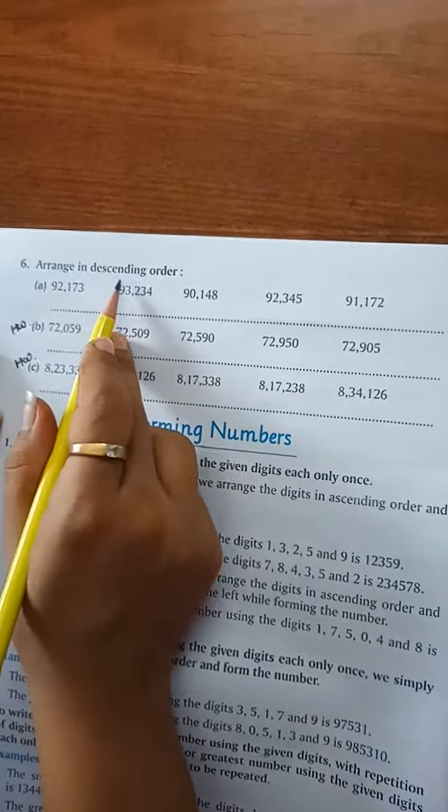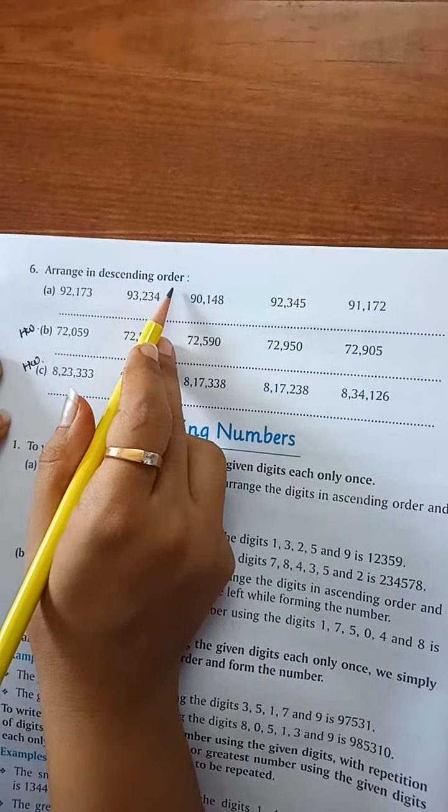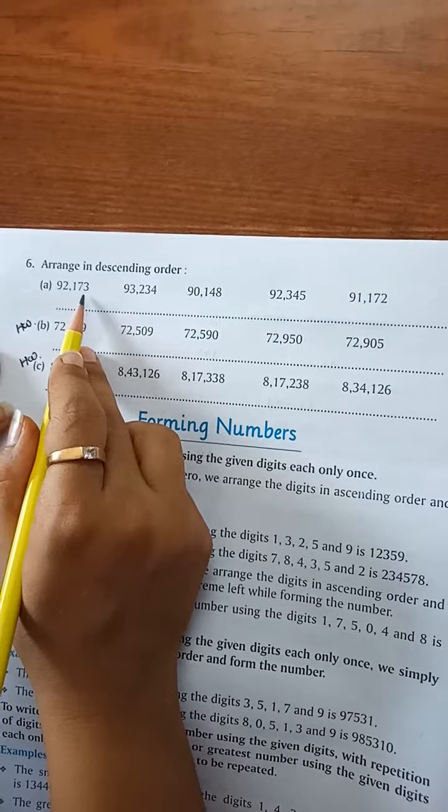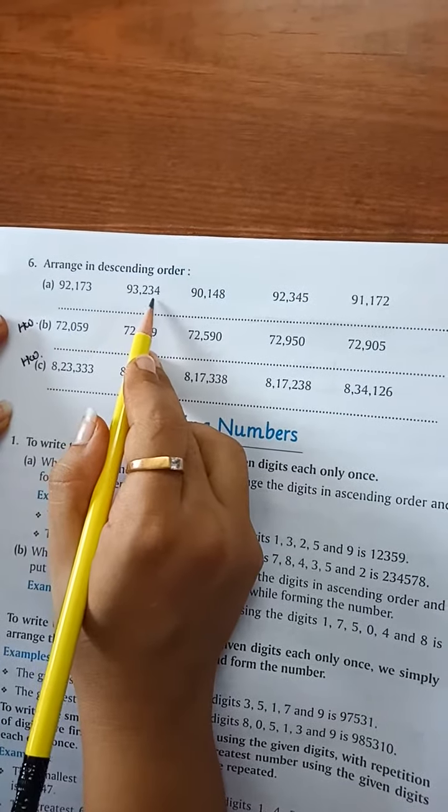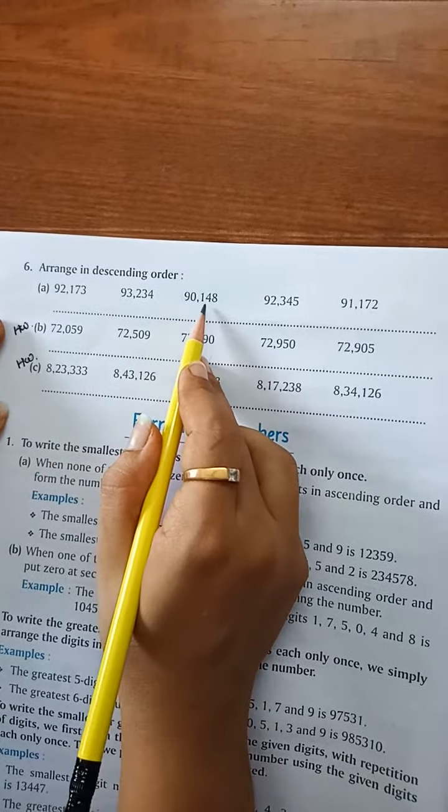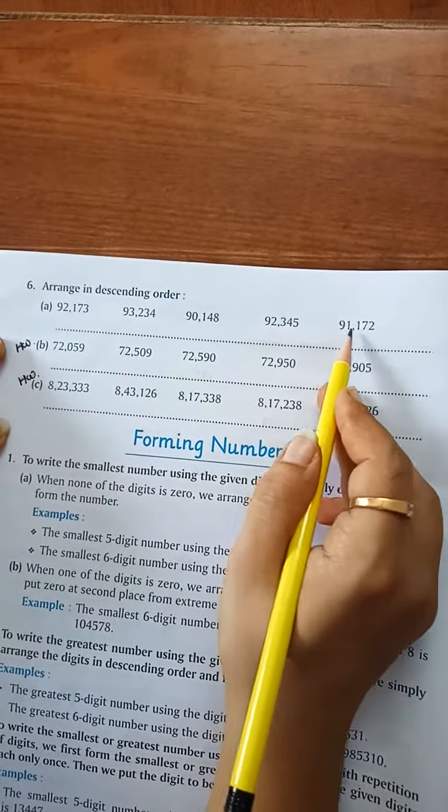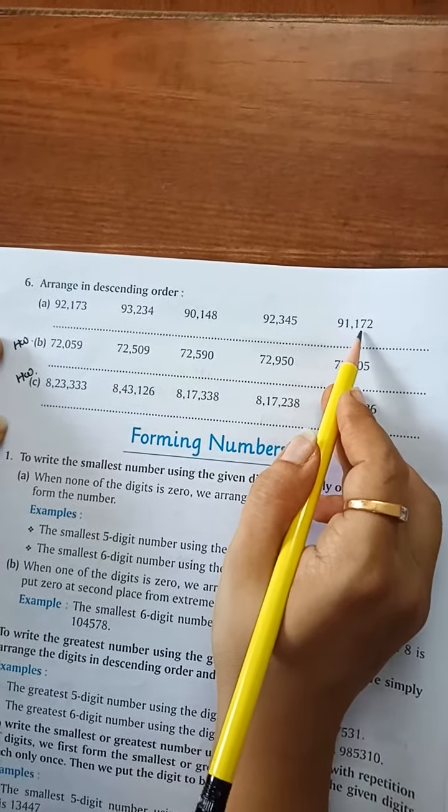Question number 6. Arrange in descending order. Descending order means bigger to smaller. 92,173, 93,234, 90,148, 92,345, 91,172.